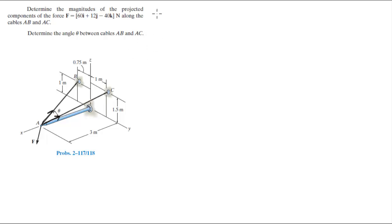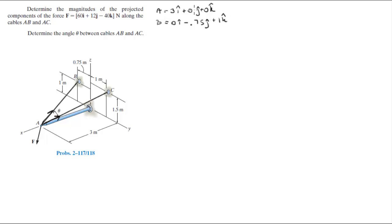First, we're going to find all the points involved. A sits at 3i + 0j + 0k. B sits at 0i − 0.75j + 1k. And C sits at 0i + 1j + 1.5k. Now that we have all the points involved, we can find the vectors we're going to use.